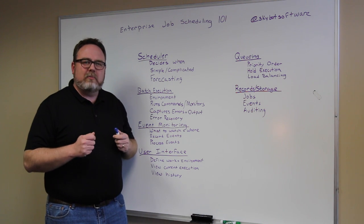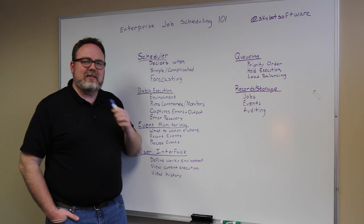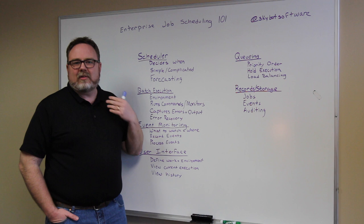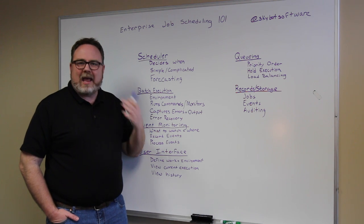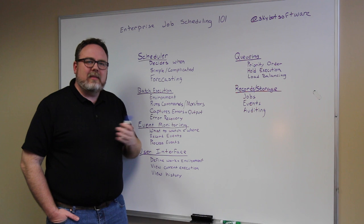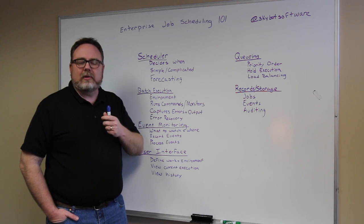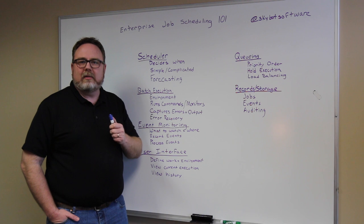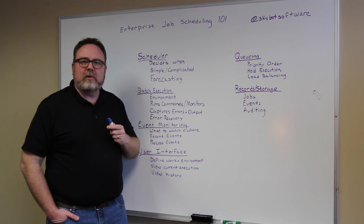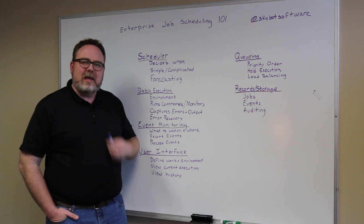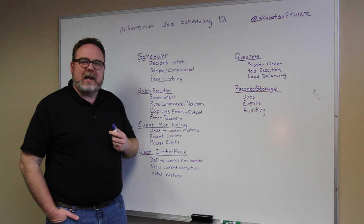The first most important thing with batch execution is that the environment gets set up. That includes things like, if you're looking at a Linux system, environment variables, the path, things along those lines — especially really important — the user that's going to be running those particular commands. The second part, also important, is running the commands and then capturing the errors and the output that come out of those commands.